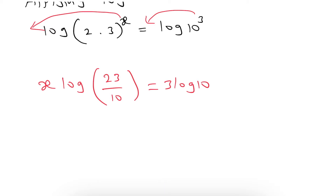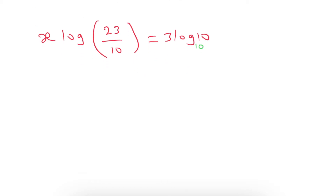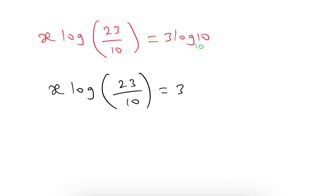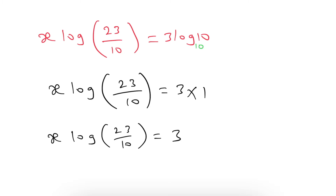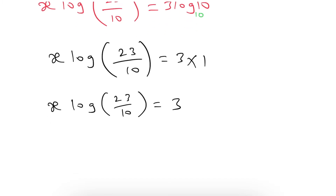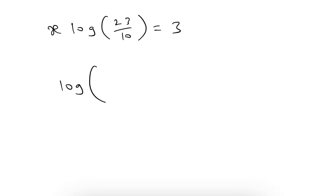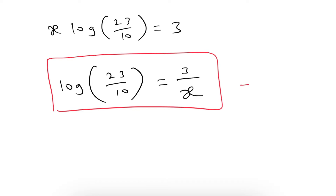For any logarithm where the base is not given, the base is always 10. So log 10 base 10 equals 1, giving x·log(23/10) = 3. Taking x to the right side, we get log(23/10) = 3/x. This is equation number 1.